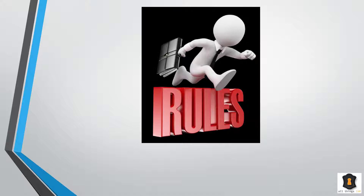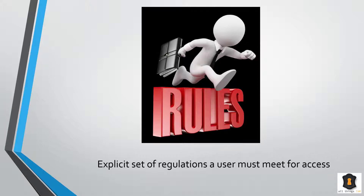So what are rules? Think of rules as an explicit set of regulations that a user must meet to get access. For example, you can write rules giving corporate employees access to the corporate internet if their IP address meets the corporate environment — that's a rule. Another common one is time-based access: only during the workweek, Monday through Friday, can you access certain applications. On weekends those applications are not available. These are particular rules a user must meet.